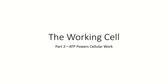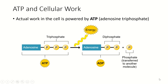In this section we're going to talk about the molecule ATP, which is by far the most important molecule for getting things done inside a cell. ATP is the molecule that cells use to actually power and make things happen inside the cell.